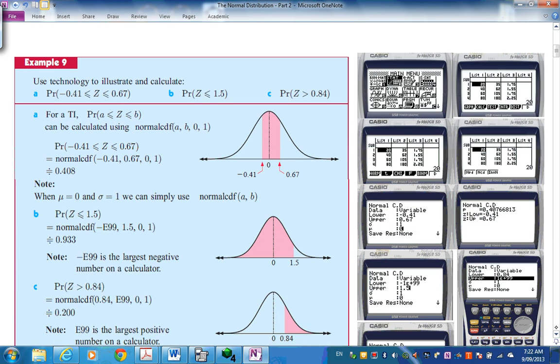Clearly, technology is in here, because you can actually put this function on the calculator. Use technology to illustrate and calculate probability of Z being between neg 0.41 and 0.67. The first thing, this is very important, is draw a diagram. Show the mean. I like to put mu is 0, sigma is 1, so I'm ready to put it on the calculator.